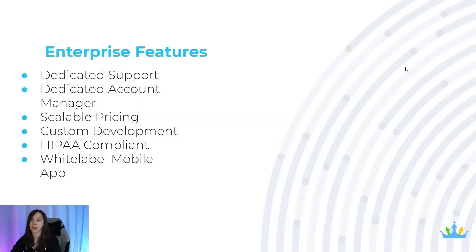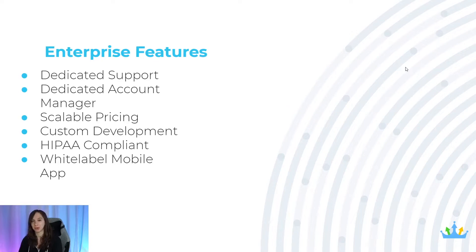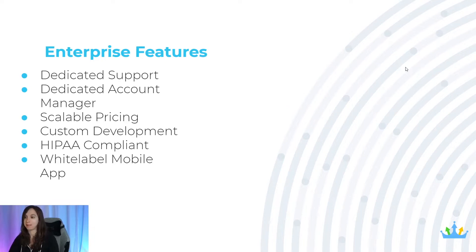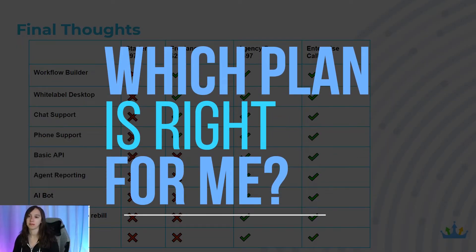With enterprise you get all of that, plus features you won't get with other plans: dedicated support, a dedicated account manager, scalable pricing, custom development, and HIPAA compliancy — which as of now, out of the box, is an extra $297 per month. You also get your own white label mobile app, which the High Level team actually develops and maintains in the app stores for you. That alone is normally an extra $597 a month, but with the enterprise package you'll likely get a better deal.